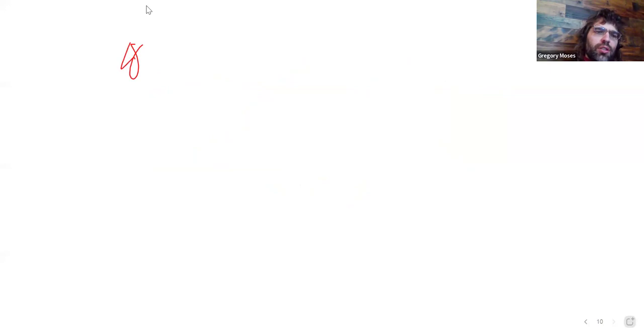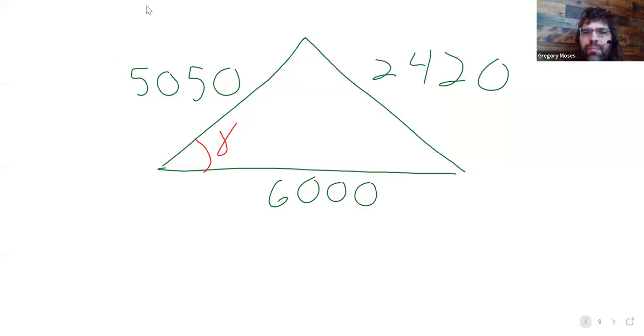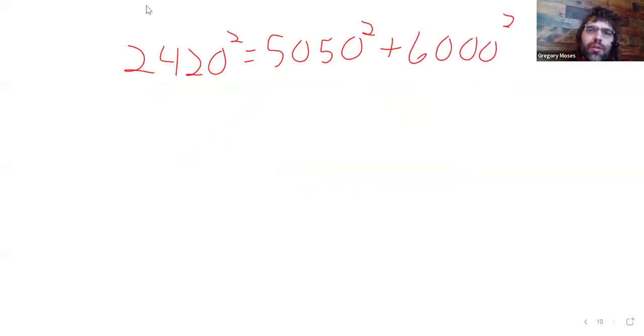Let's see. Try that again. 2420 squared equals 5050 squared plus 6000 squared minus 2 times 5050 times 6000 times the cosine of gamma.